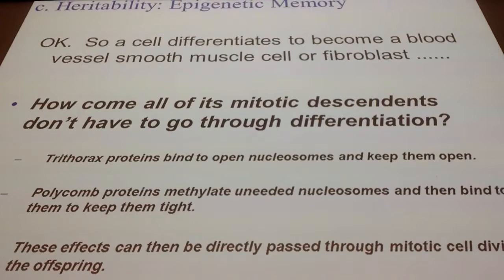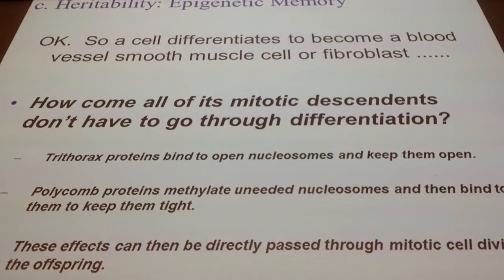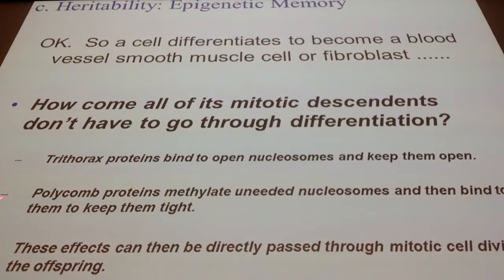This epigenetic pattern is something we inherit — you inherited that pattern but not changing the sequence of the DNA. Trithorax protein correlates to euchromatin, polycomb protein correlates to heterochromatin. Both are related to function — one is active, one is inactive.